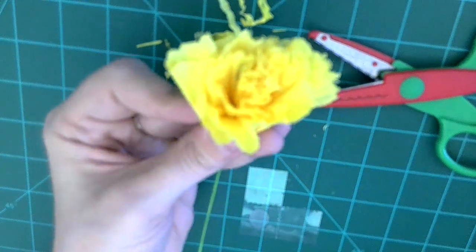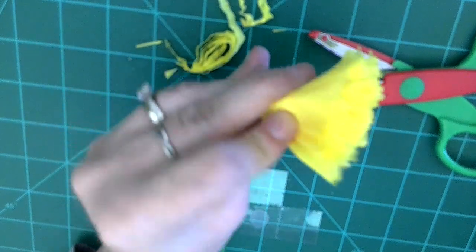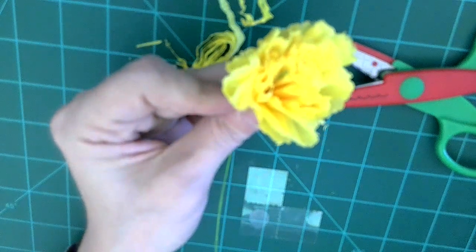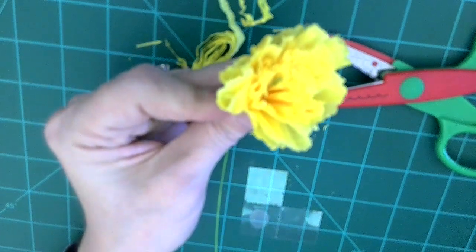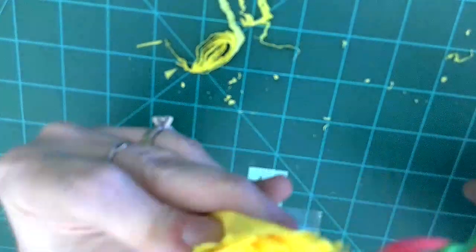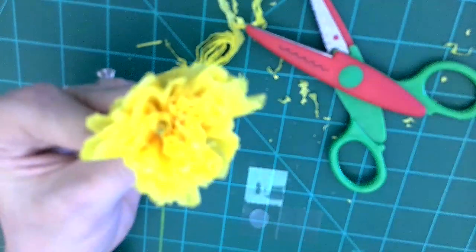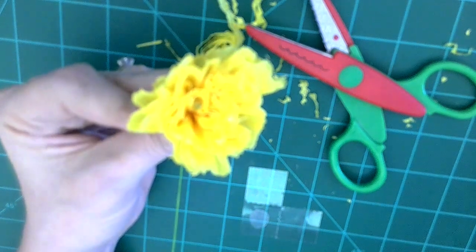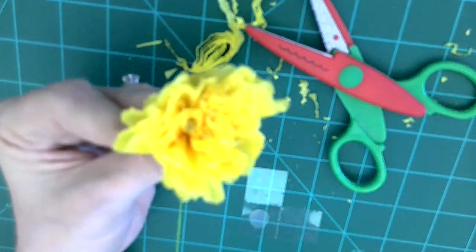With the crepe paper accordion folding the flower you can see it looks like a carnation and if you see any edges that you want to retrim with your fancy scissors you can certainly do that now. Using that fancy scissors is what gives this flower its carnation like appearance.